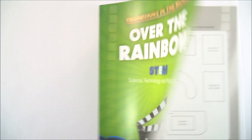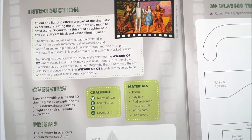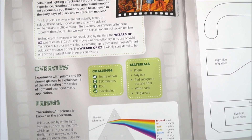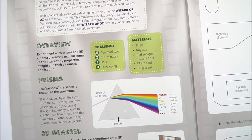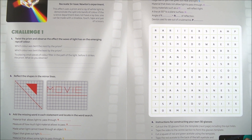Over the Rainbow is a resource from the Royal Academy of Engineering, and it really focuses on lighting engineers and what they do in the movies. In the guide there's a bit of history about when colour was first used in films, there's some of the science about how a prism can split white light into the colours of the rainbow, and then there's a series of activities for the students to work through.